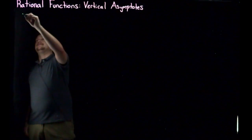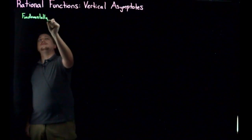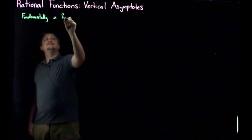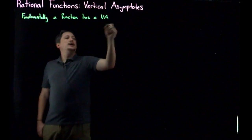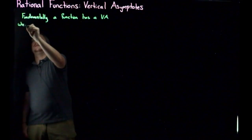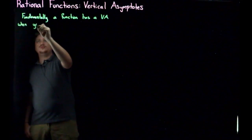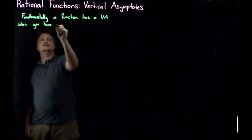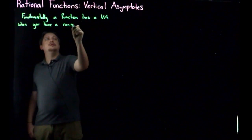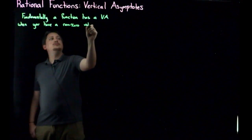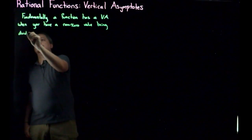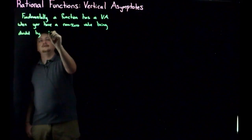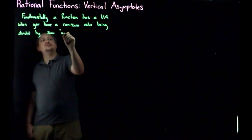So, fundamentally, a function has a vertical asymptote, which I'm just going to write as VA, when you have a non-zero value being divided by something arbitrarily small.